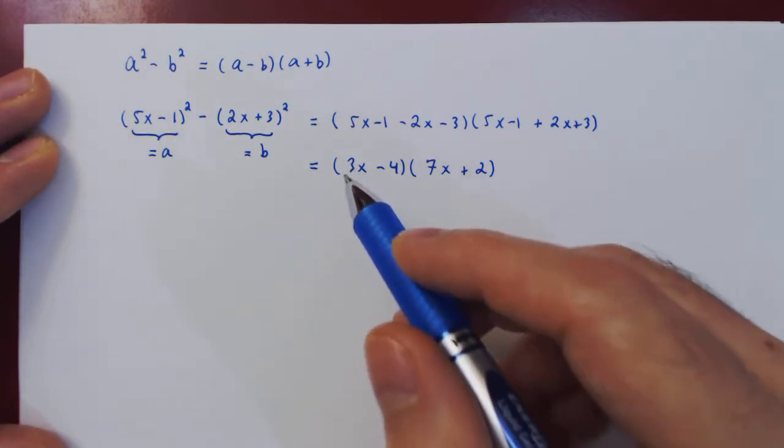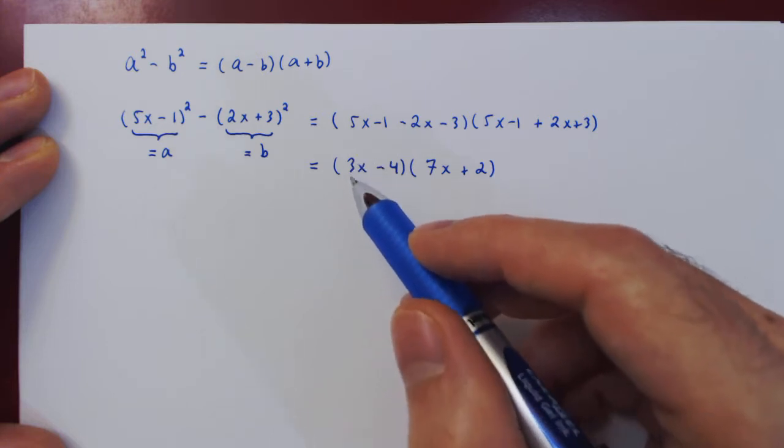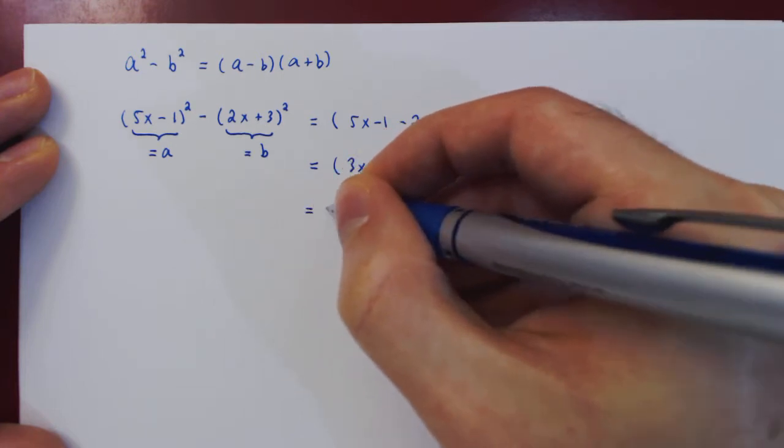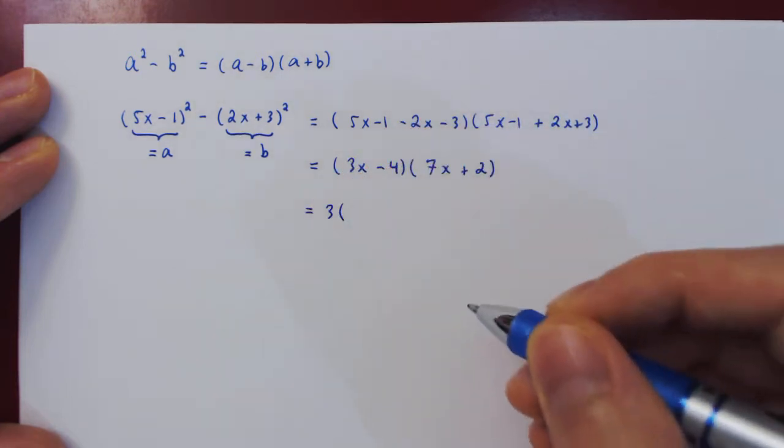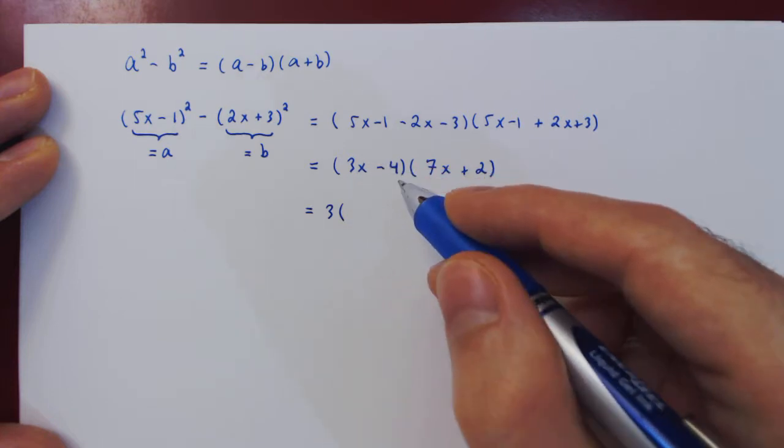And if we wanted to, and again, there's nothing wrong with this, but if we wanted to have leading 1's for the multiples of x, then we could factor 3 from the first polynomial. If we factor 3 out, then we're left with x minus 4 over 3.